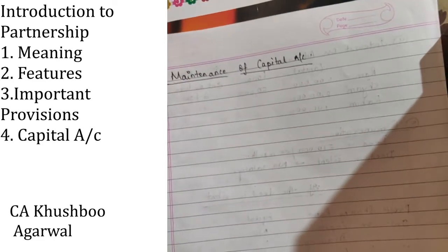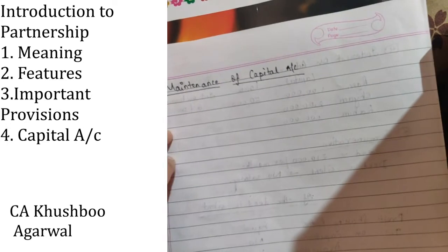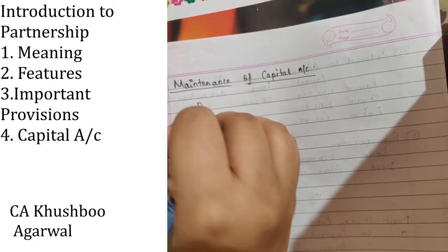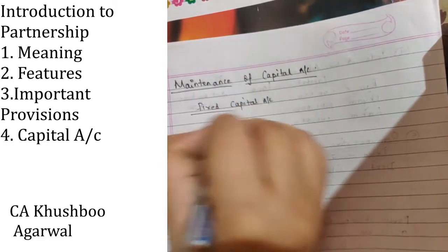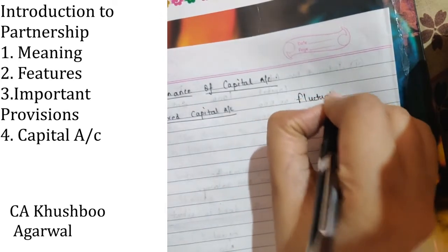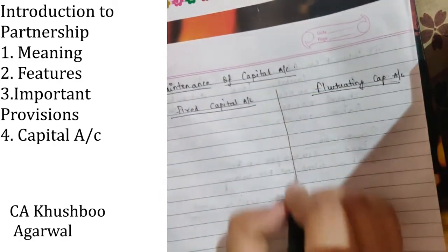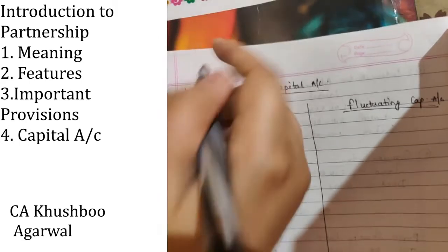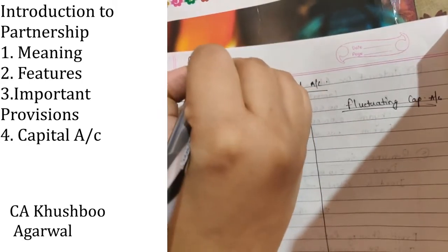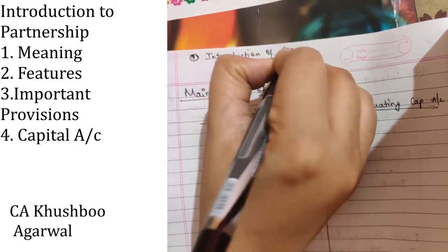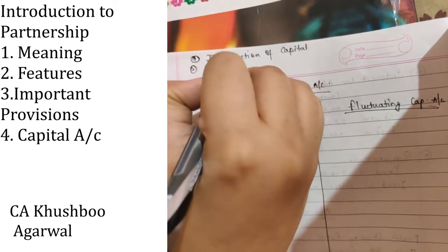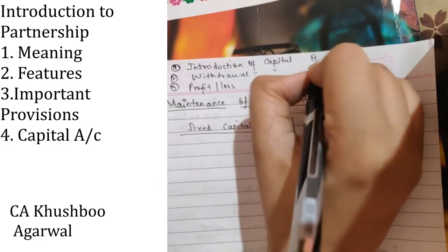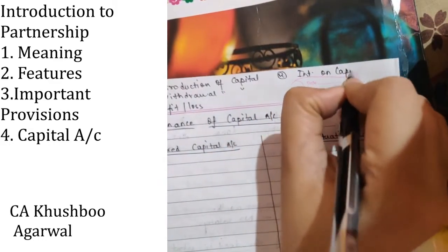Now we are going to look at the maintenance of the capital account. Each partner contributes some amount as capital. There are two methods of maintaining the capital account: one is the fixed capital account method and second is the fluctuating capital account method. In a capital account, the following types of transactions can take place: introduction of capital, withdrawal of capital, profit or loss of the partner, interest on capital if any, interest on drawings, and salary.